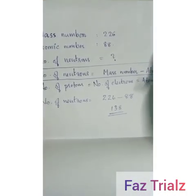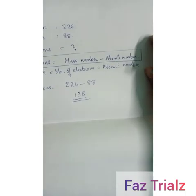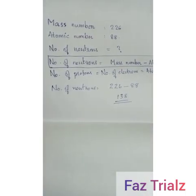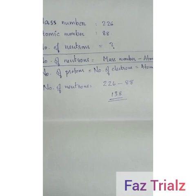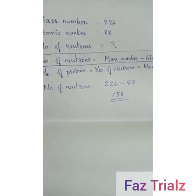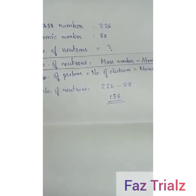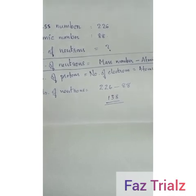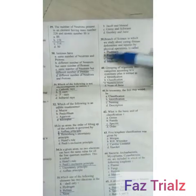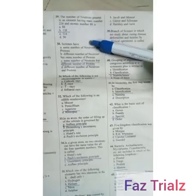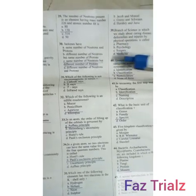The number of neutrons can be calculated as mass number minus atomic number. Mass number is 226 and atomic number is 88, so the number of neutrons equals 226 minus 88, which is 138. Isotones have the same number of neutrons but different numbers of protons.